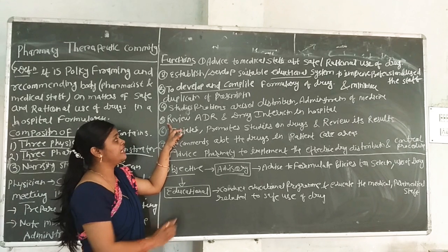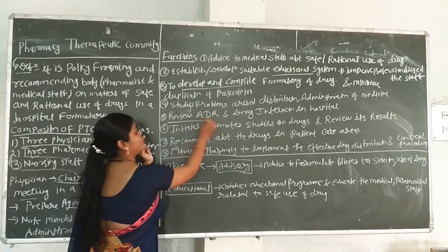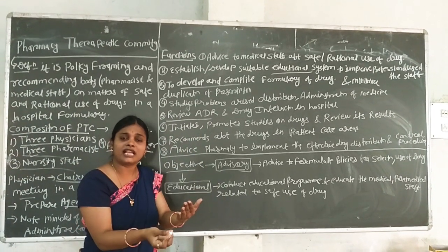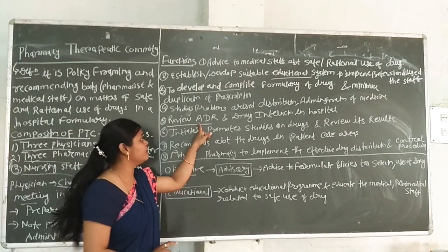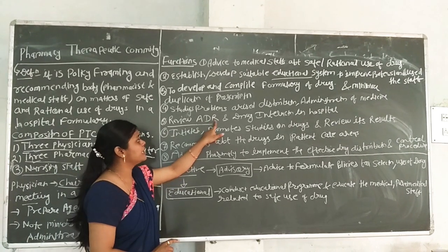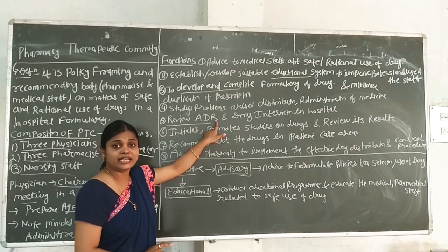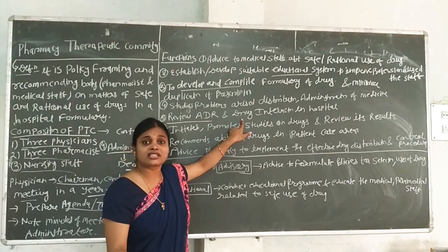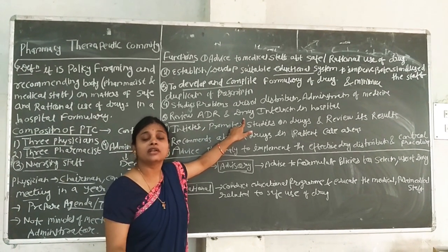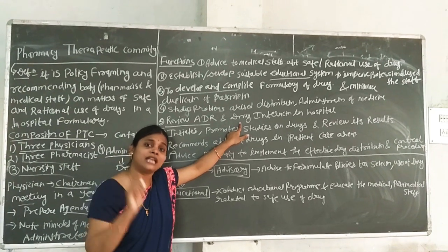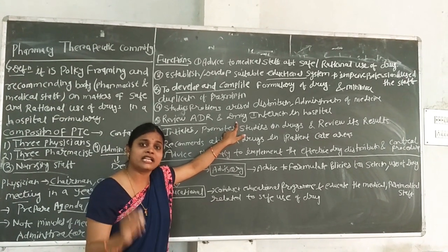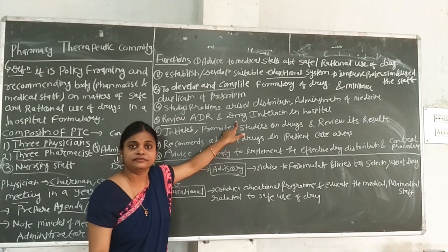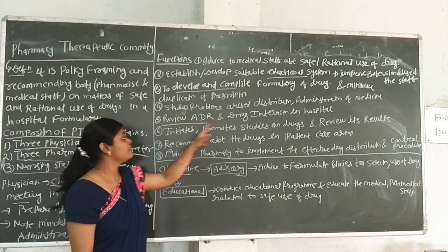Fifth function: review adverse drug reactions (ADR). Patients who are being given distributed or administered drugs may experience adverse drug reactions, and the PTC must review these.